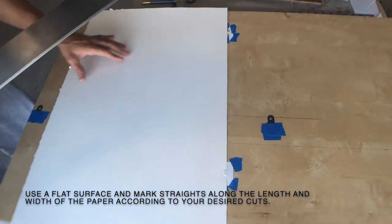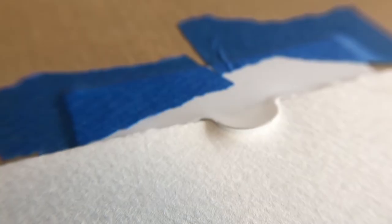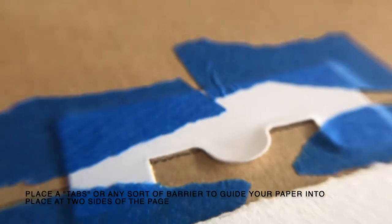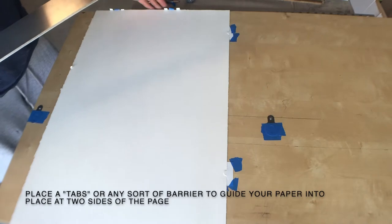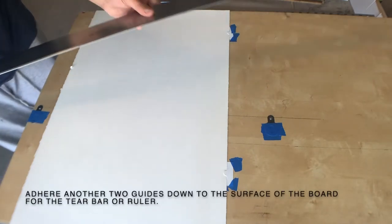I have this flat surface of wood that I use, and I mark off a horizontal and vertical. On those horizontal and verticals, I'll place tabs to line up the paper.